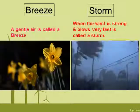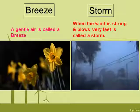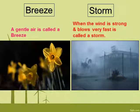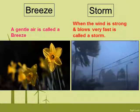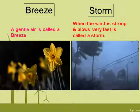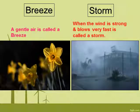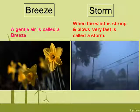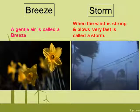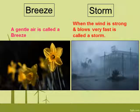A gentle wind is called a breeze. We enjoy a cool breeze. When the wind is strong and blows very fast, it is called a storm. A storm can be harmful — it can blow things away and damage trees and houses.